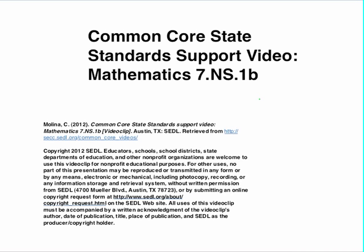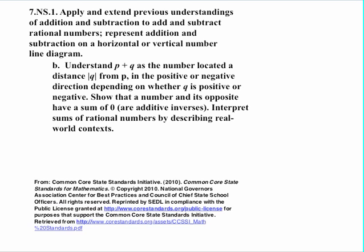This is a Common Core State Standards Support Video for Mathematics, Standard 7.NS.1B. The introductory statement says: apply and extend previous understandings of addition and subtraction to add and subtract rational numbers. Represent addition and subtraction on a horizontal or vertical number line diagram. Specifically, Part B states: understand p plus q as a number located a distance absolute value of q from p, in the positive or negative direction depending on whether q is positive or negative. Show that a number and its opposite have a sum of zero, or additive inverses. Interpret sums of rational numbers by describing real-world context.